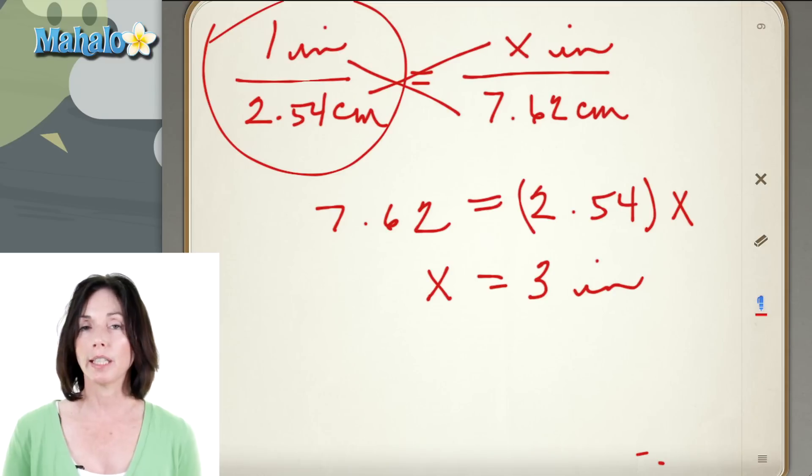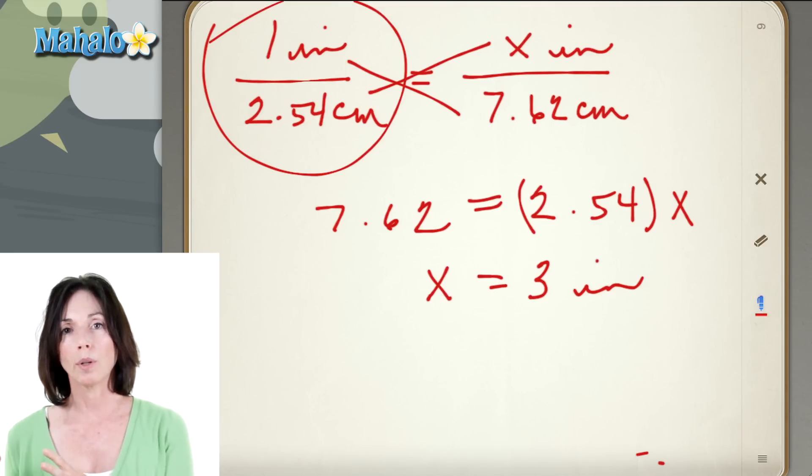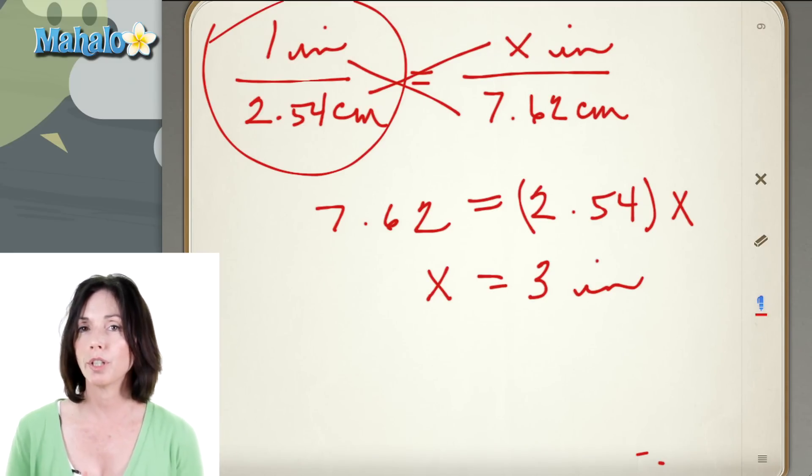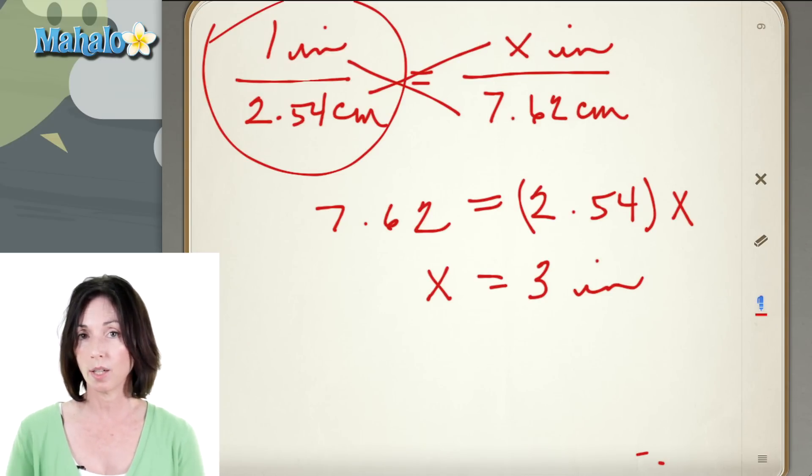So whenever you need to convert inches to centimeters or centimeters to inches this is how you can do it. You write down your conversion factor and then you set that equal to what you're trying to convert. But just make sure that your inches and your centimeters are on the same side on both sides of the equation.